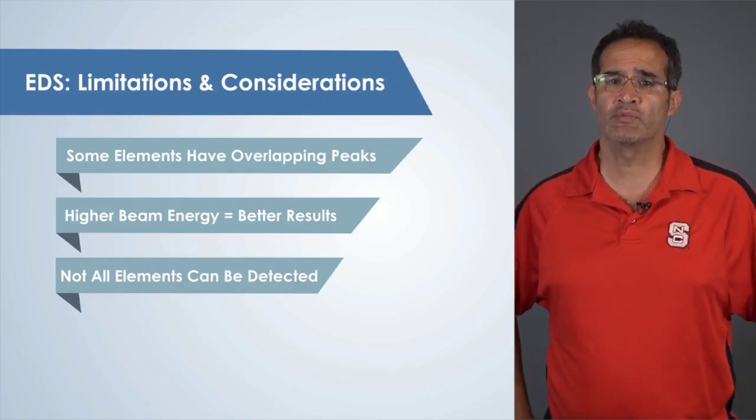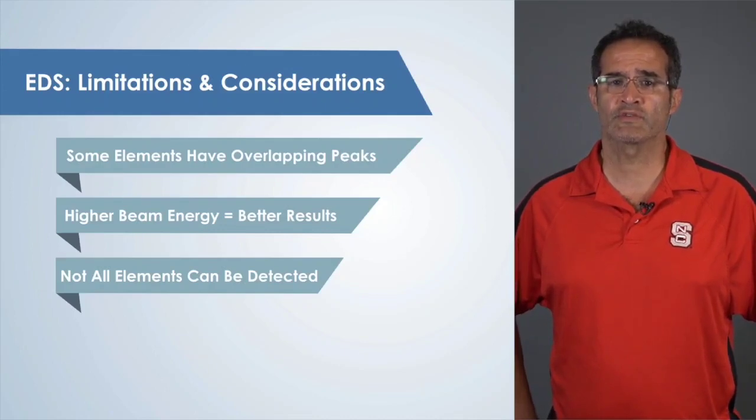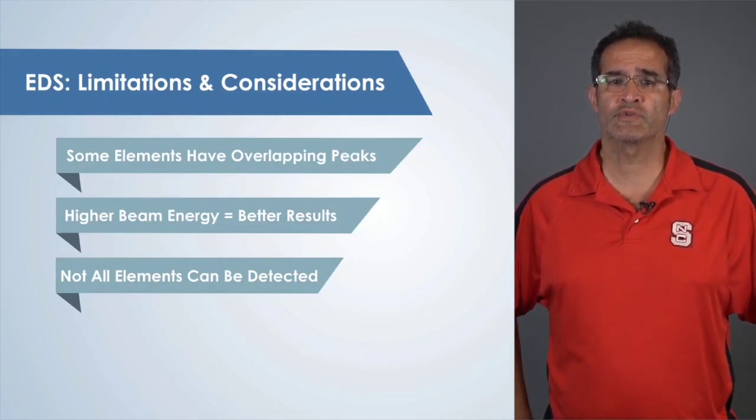Some elements are not detectable and others pose difficulties for EDS analysis. For instance, hydrogen and helium do not have characteristic x-rays. Similarly, lithium and beryllium produce x-rays that are too low energy to be detected. Despite these challenges, EDS is nonetheless a very useful and simple nanomeasurement technique to provide very fast elemental information of many different types of samples.